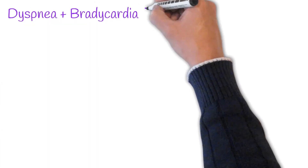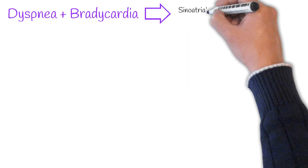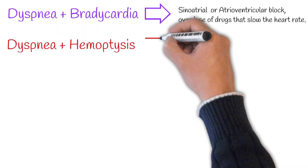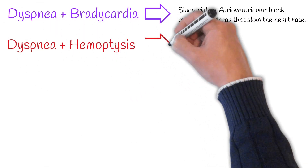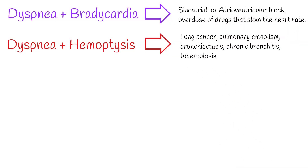If dyspnea is accompanied with bradycardia — slow heart rate — it can be caused by sinoatrial or atrioventricular block, or overdose of drugs that slow the heart rate. Hemoptysis — coughing up blood — with dyspnea can indicate lung cancer, pulmonary embolism, bronchiectasis, chronic bronchitis, or tuberculosis.